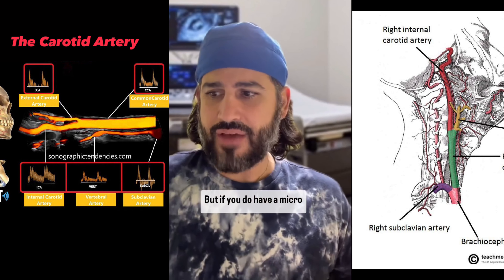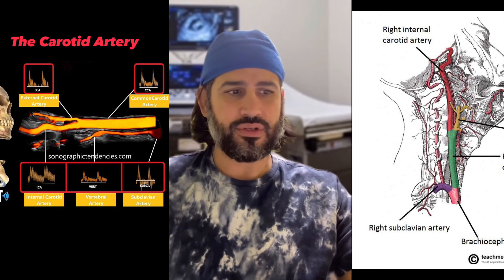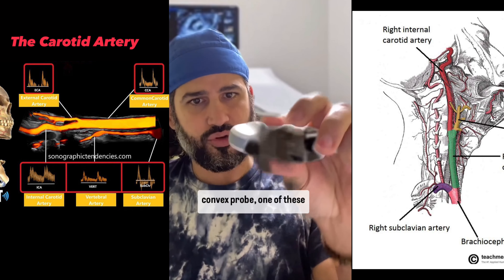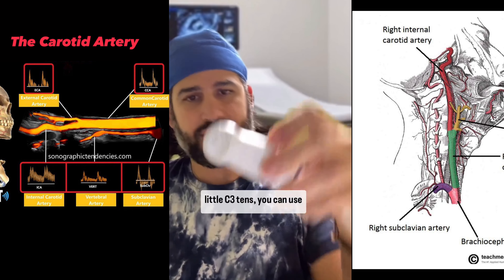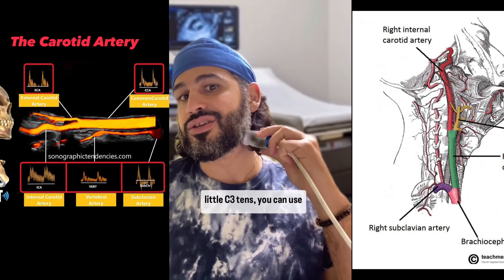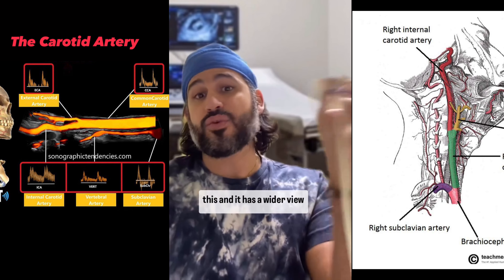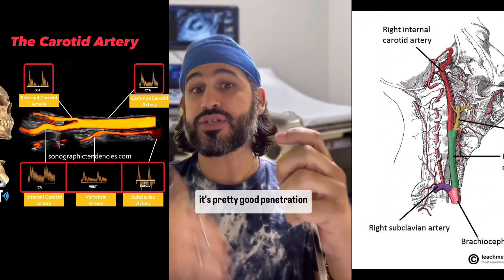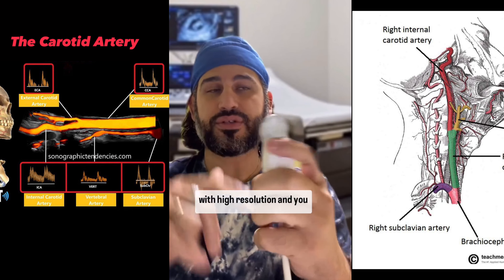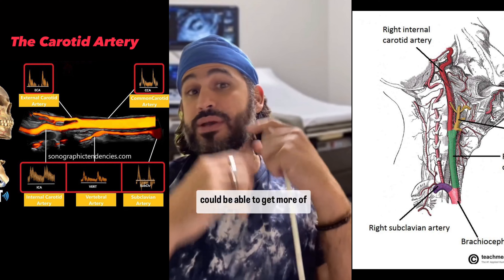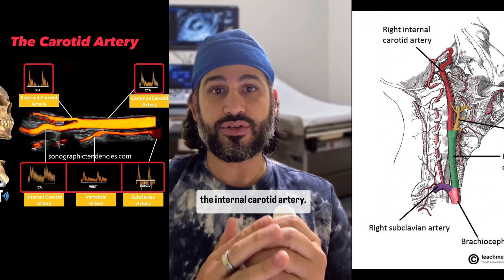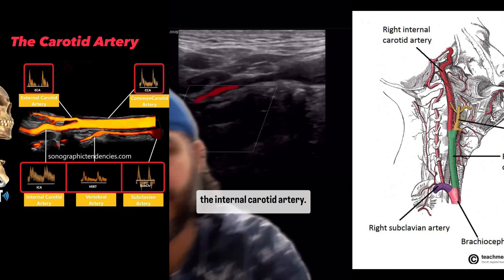But if you do have a micro-convex probe, one of these little C310s, you can use this and it has a wider view. It's pretty good penetration with high resolution, and you could be able to get more of the internal carotid artery.